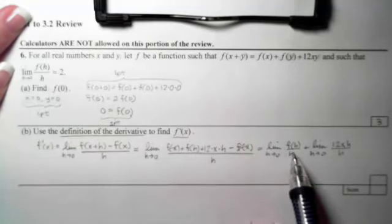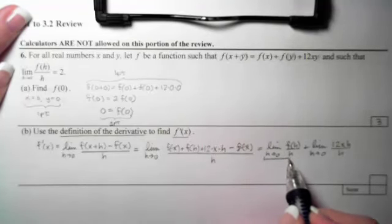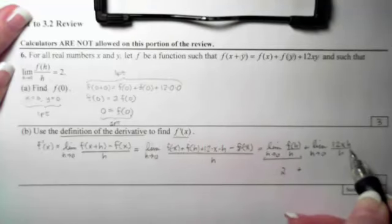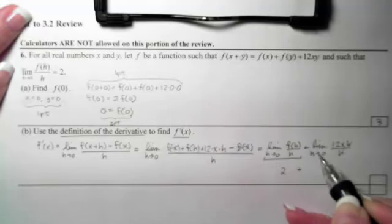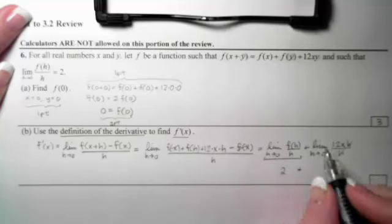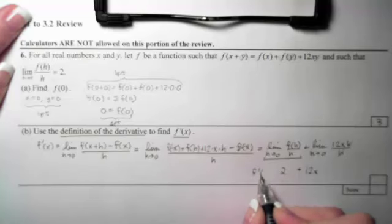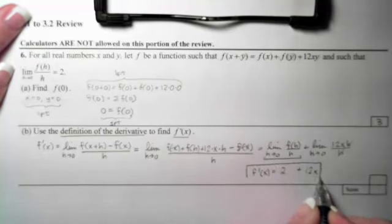So I created this same expression by splitting my limits down here. Notice here's my limit as h approaches 0 of f of h over h. So this, from my given information, I know is 2. And this piece over here, because I can cancel the h's, now has an expression independent of h. So the limit of this is just going to be 12x. So I have now determined that f prime of x is 2 plus 12x.